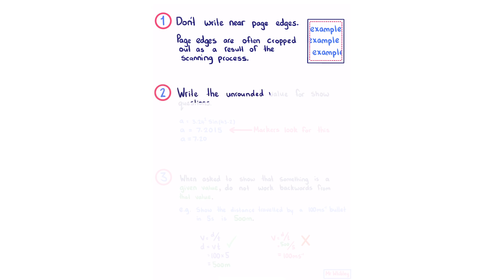Number two, write the unrounded value for show questions. For example, if we were asked to show that an acceleration was 7.20, when looking at your working your markers will be looking for this unrounded value. If the rest of your working is difficult to decipher, having this unrounded value will clearly signal that you've calculated the value correctly.